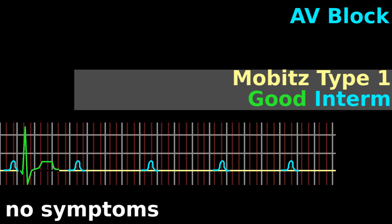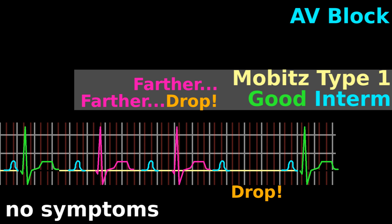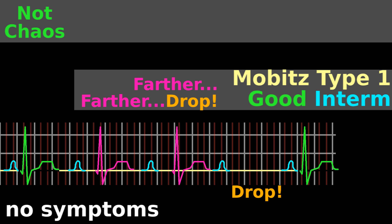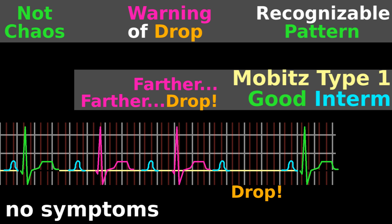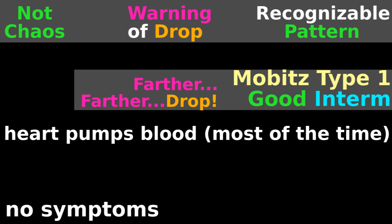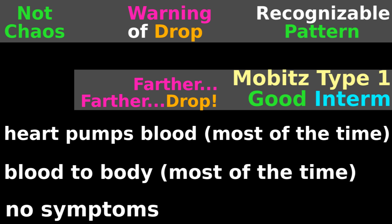The good intermediate of Mobitz type 1 means that the AV node has problems, but you don't notice symptoms. Most beats are fine — they just get a little farther and farther apart until a signal gets dropped. This is not chaos; at least you get a warning that a missed beat will happen soon, so there's still a recognizable pattern. If your heart is pumping blood most of the time, you're still getting enough blood to your body, so you really don't notice that every once in a while you dropped a heartbeat.